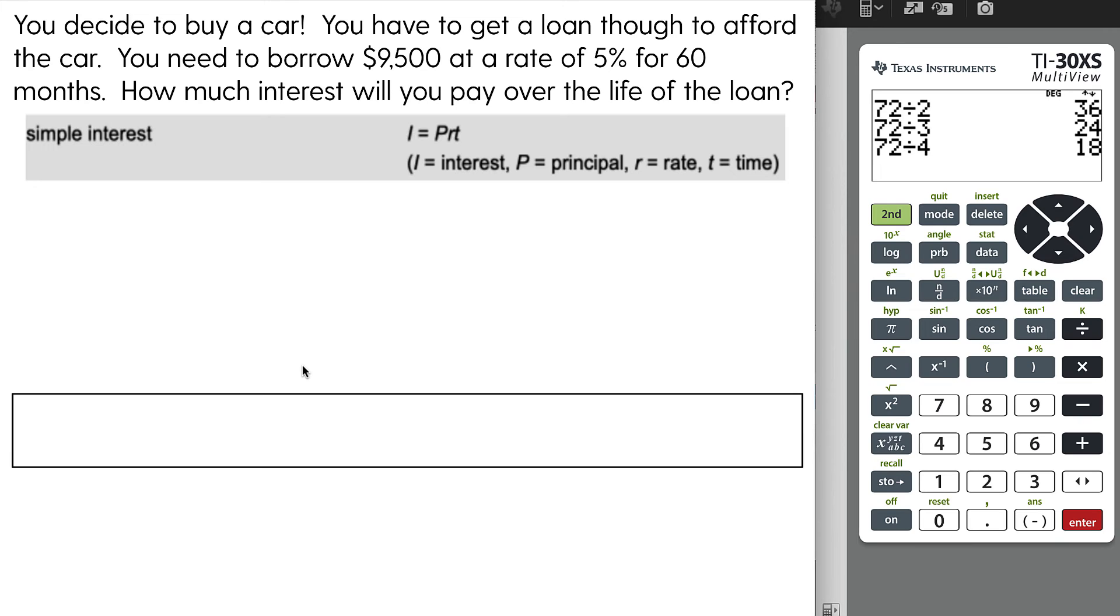You decide to buy a car. You have to get a loan, though, to afford the car. You need to borrow $9,500 at a rate of 5% for 60 months. How much interest will you pay over the life of the loan? This is a pretty typical real-life example. Let's take this formula, I equals PRT.